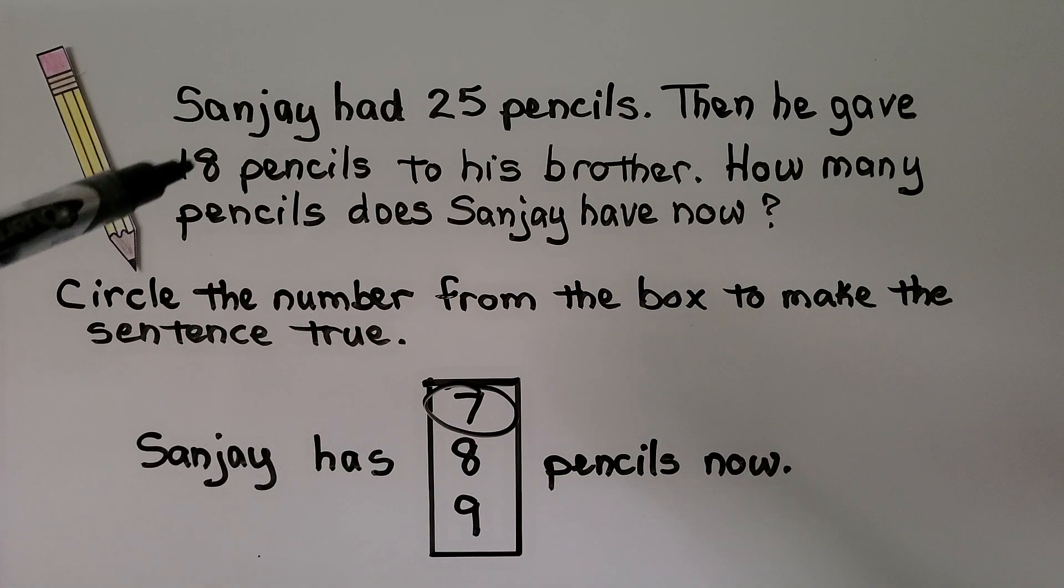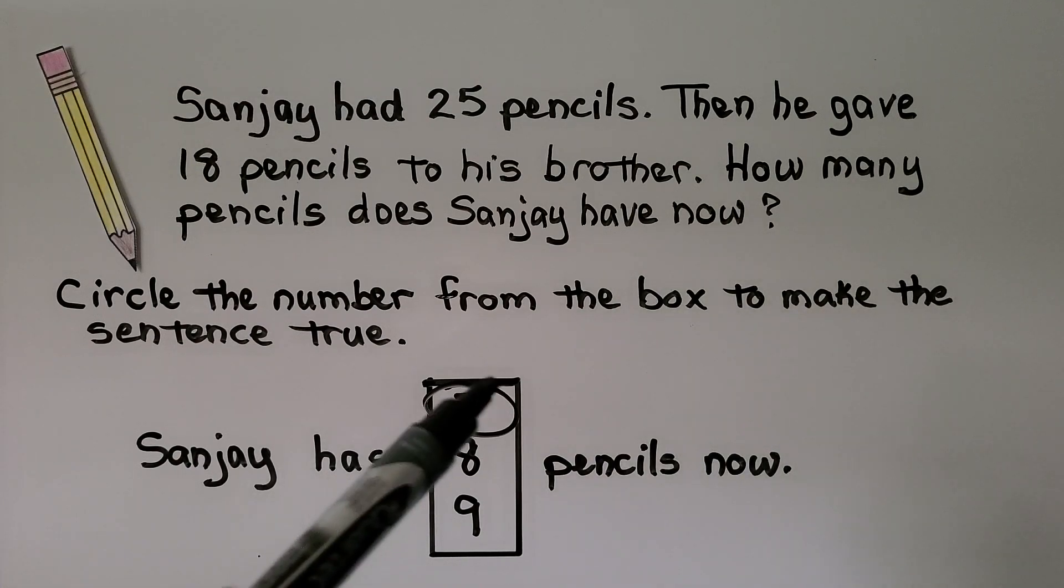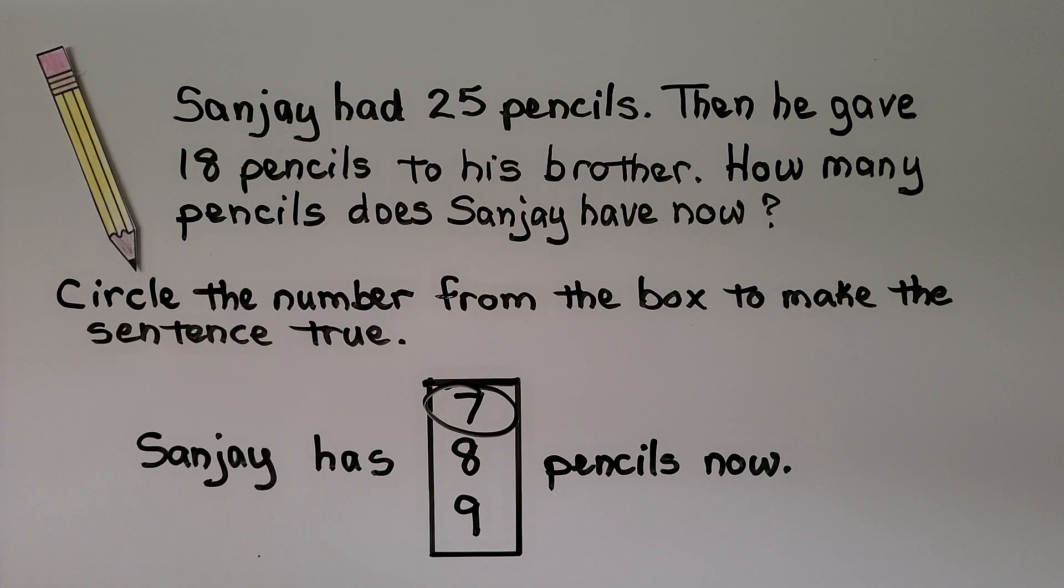We needed 2 to get to 20 and 5 more to get to 25. 2 plus 5 is 7. That means he has 7 pencils now.